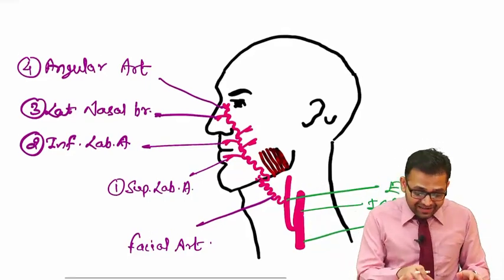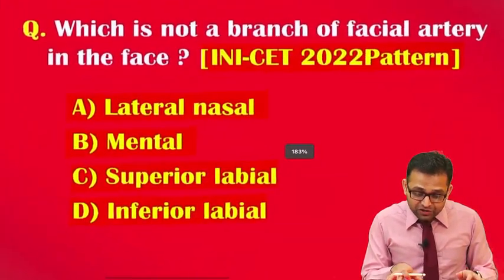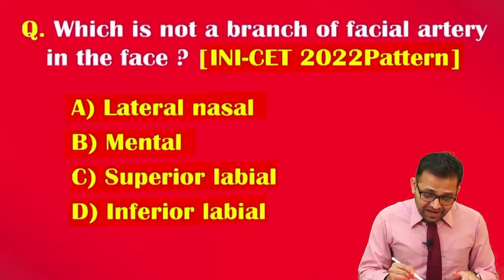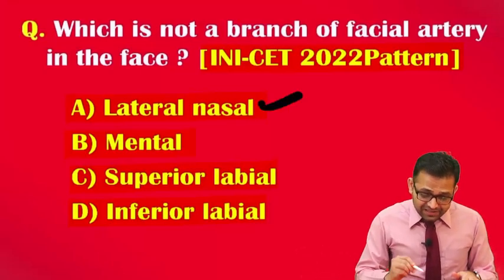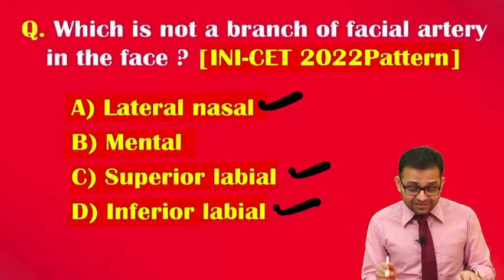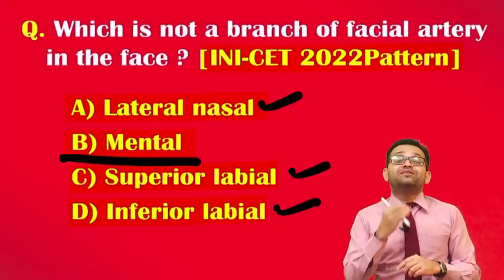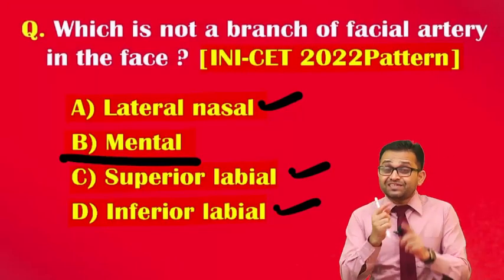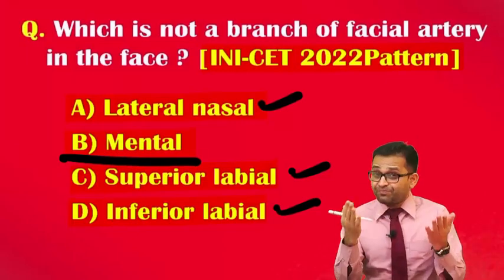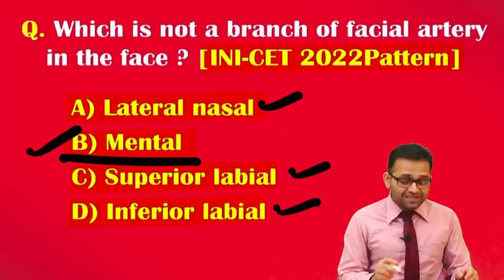So you can easily crack this MCQ: which is not a branch of the facial artery in the face? Lateral nasal artery is a branch; superior labial and inferior labial are all branches. But the mental artery is not a branch of the facial artery. Remember, the mental artery at the mental region is a continuation of the inferior alveolar artery, which is a branch of the maxillary artery. So the answer is B.